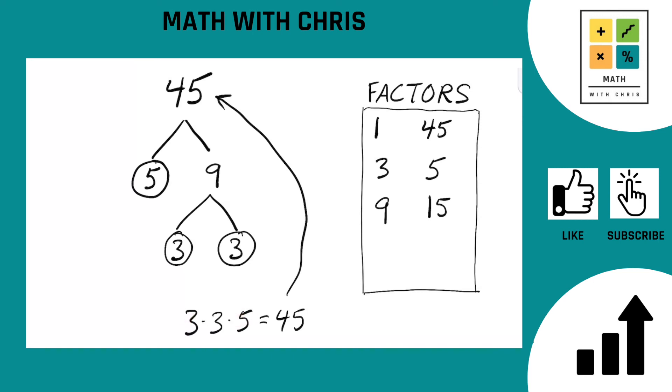And anything else? Nope. 3 times 5 is also 15. So we are done. There it is. We got 6 factors of 45.